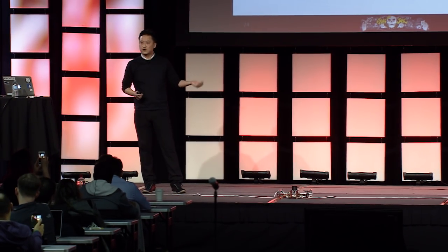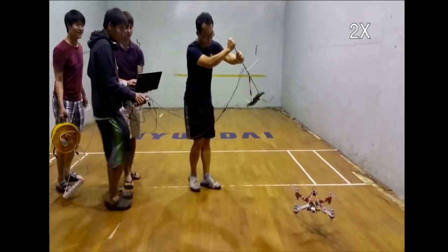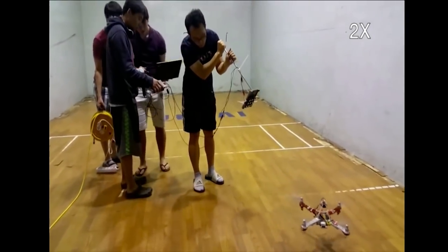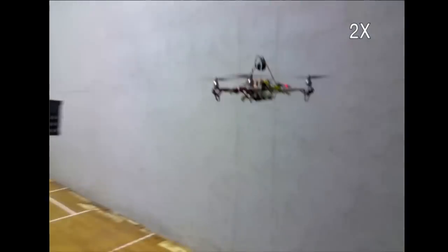In the previous example, we attached a speaker for convenience. But how do we launch this kind of attack remotely? We designed a small directional speaker array using nine directional antennas and nine small speakers. The aiming is not easy with this kind of sound gun.